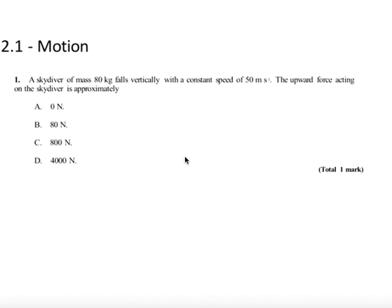All right, David Kahn here with another question from topic 2.1, motion. This is another IB question. We have a skydiver with a mass of 80 kilograms falling vertically with a constant speed of 50 meters per second.